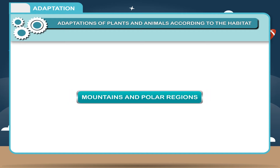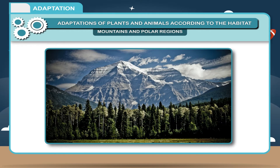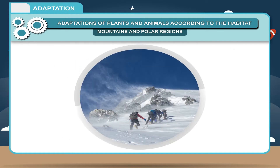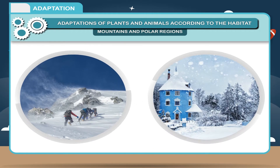Mountains and Polar Regions. Mountains are the regions that rise much higher than the land surrounding them. These habitats are cold and windy, and snowfall occurs in higher regions.